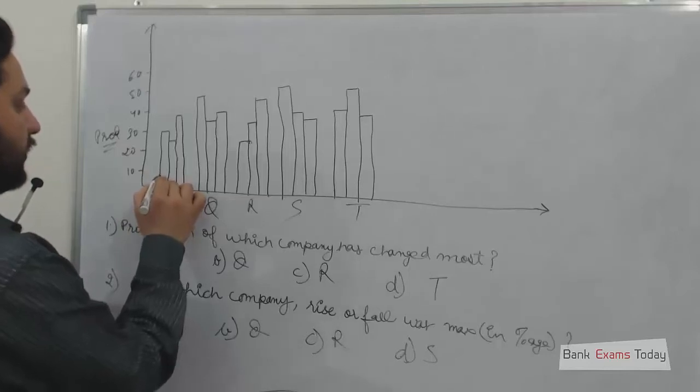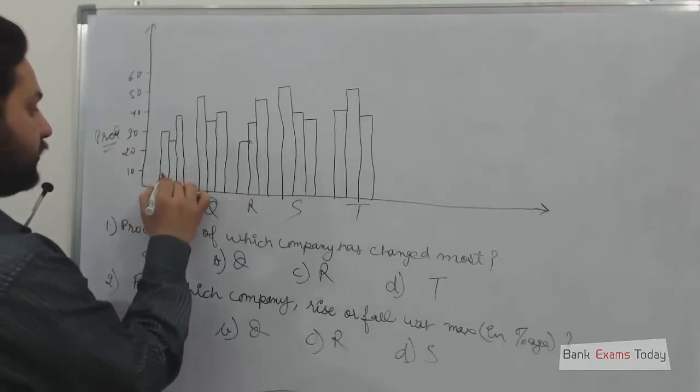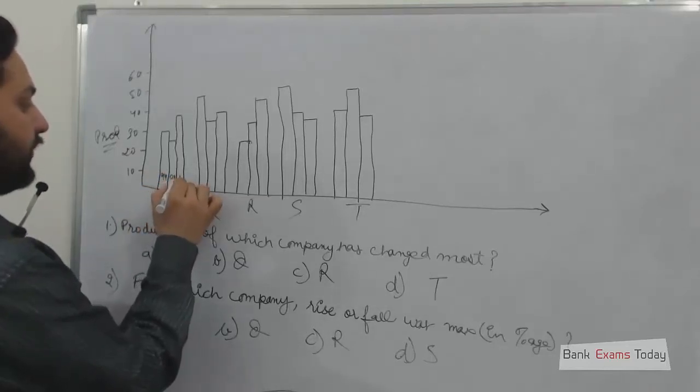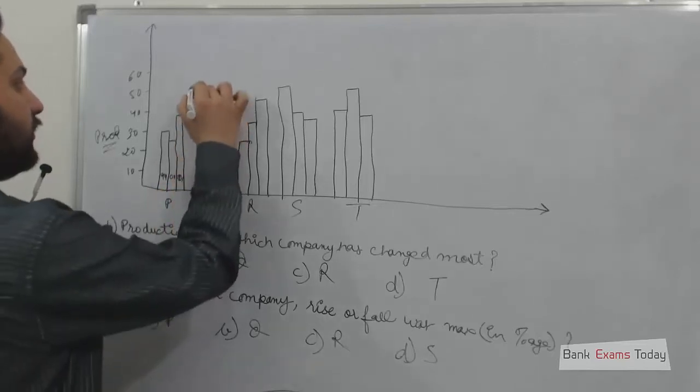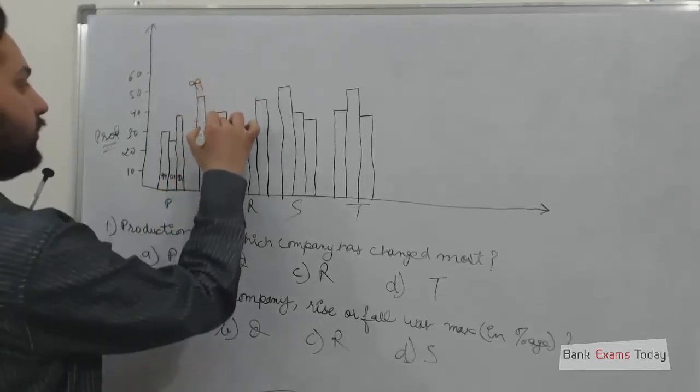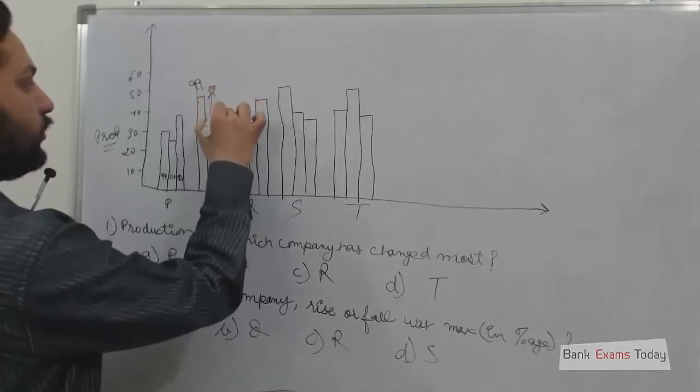This one is years. This one is year 99, this one is year 2000, 2001. Similarly here, this is year 99, year 2000, year 2001.